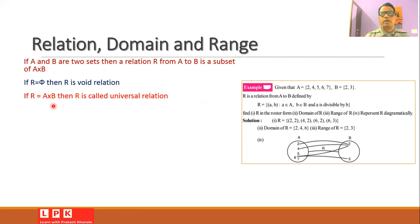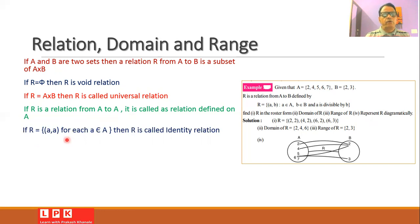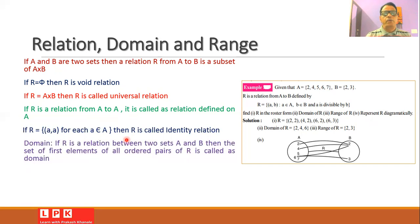If the relation R equals A cross B, that is the full Cartesian product of A and B, then R is called a universal relation. If R is a relation from A to A itself, it is called a relation defined on A. If R equals {(a, a)} for each a belonging to A, then R is called the identity relation. Now we can define the domain of a relation.